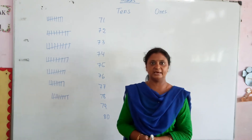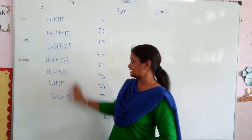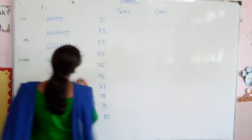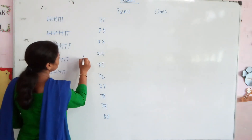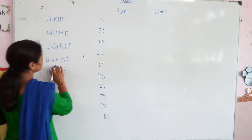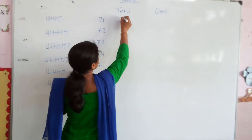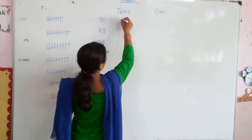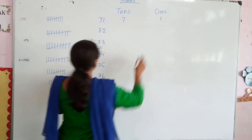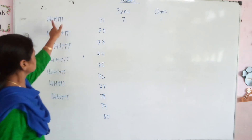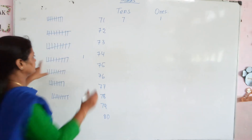Now we are going to do it. So this is 70, and one more is 71. You will write 7 in the 10s place and 1 as extra. This is called 71.